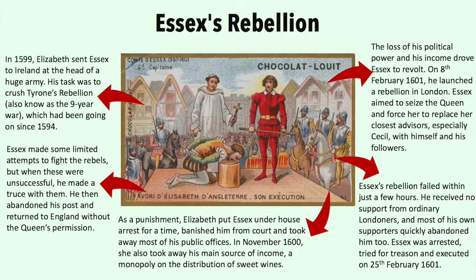As a punishment, Elizabeth put Essex under house arrest, banished him from court, and cut away all of his public offices. In November 1600, she also took away his main source of income — a monopoly on the distribution of sweet wines.